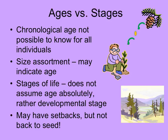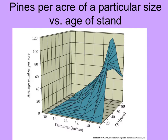In any plant, it's possible to go from one life stage back to an earlier stage because of some environmental event, but of course they can't go back to the seed. In this three-dimensional plot, we can see individual pines per acre of a particular size versus the age of the stand — the time since that stand was cut or that area deforested. In general, the older the stand, the larger the diameter of the tree, and the fewer individuals per acre there are.